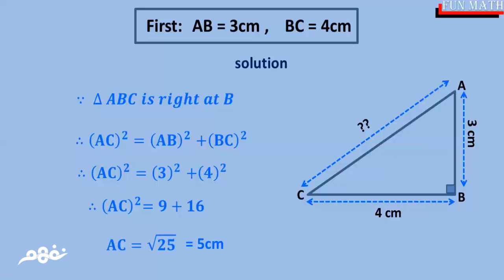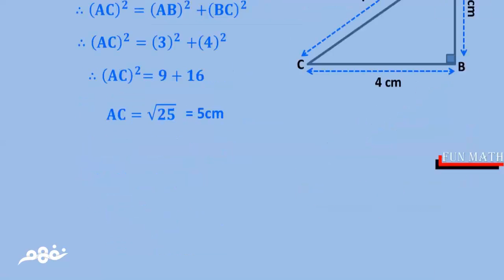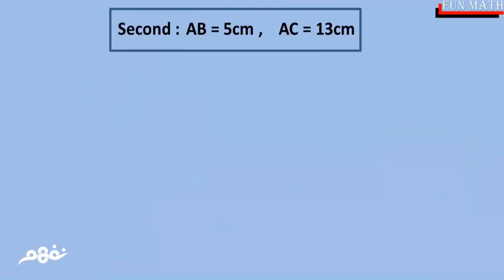By taking the square root of both sides, we get AC equals 5 centimeters.